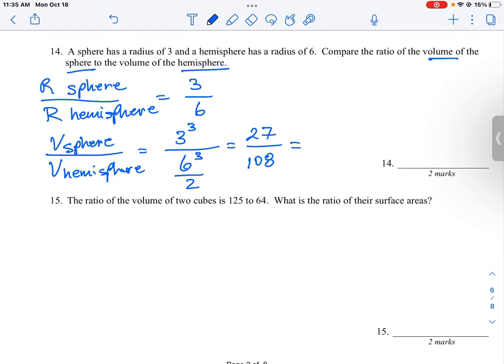So then we can reduce this. 27 goes into 27 once, and if you take your calculator, 108 divided by 27 just happens to be 4. So the ratio of the volumes, it's a little bit more complicated to figure out because we're changing the shape of the bottom one, is going to be 1 to 4. So for every one unit of the sphere, the hemisphere is going to change by a factor of 4.